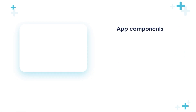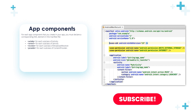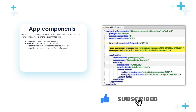Let's go deeper into the manifest and talk about the app components. For each app component that you create in your application, you must declare a corresponding XML element in the manifest file. So if you create a new activity, the activity tag should be added inside the AndroidManifest — an activity tag for each subclass of activity.